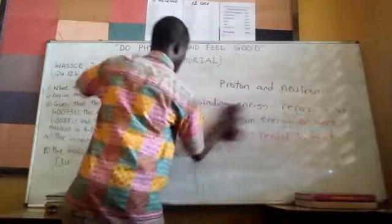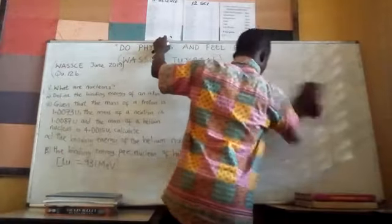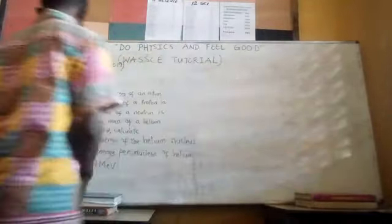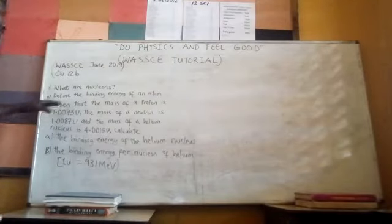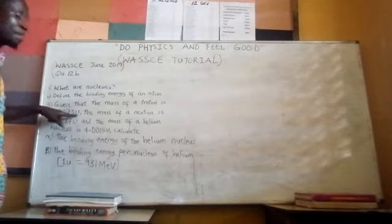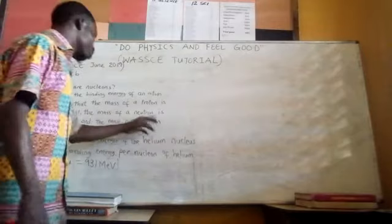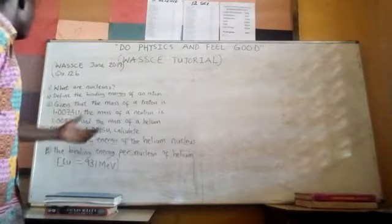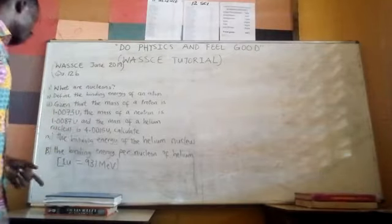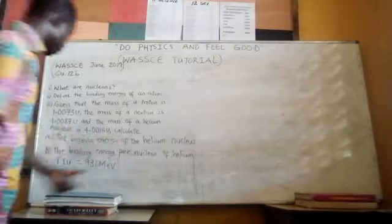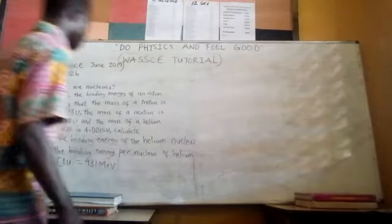Part three, question 3a: Given that the mass of the proton is 1.0073 atomic mass units (u), the mass of the neutron is 1.0087u, and the mass of the helium nucleus is 4.0015u — calculate the binding energy of the helium nucleus, and the binding energy per nucleon of helium.